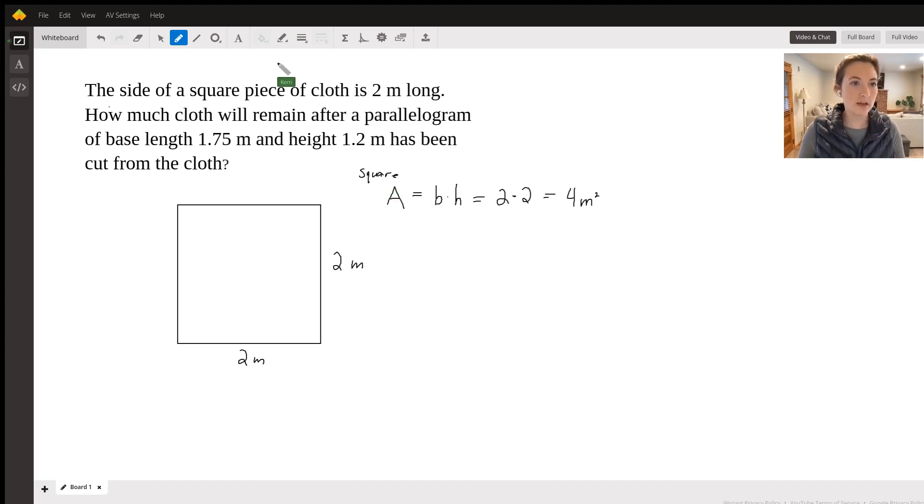There we go. Then we know we have a parallelogram. So for the parallelogram, let me draw a straighter line. A parallelogram is like a slanted rectangle in a way. I know that the parallelogram has a base length of 1.75 and its height is 1.2.